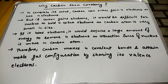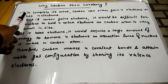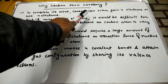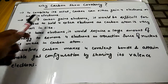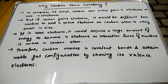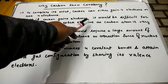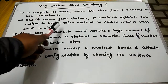For carbon to complete its octet, carbon can either gain four electrons or lose four electrons. As we already know, carbon has a valency of four. But if carbon gains electrons, it would be difficult for the nucleus to hold four extra electrons, as the carbon atom is very small in size.